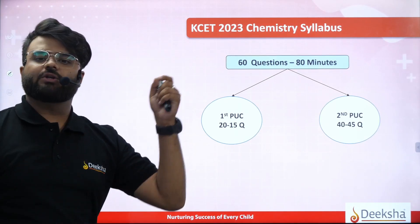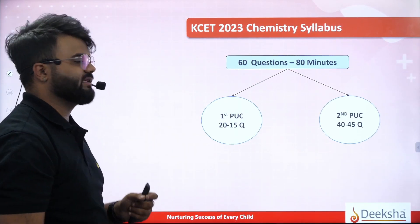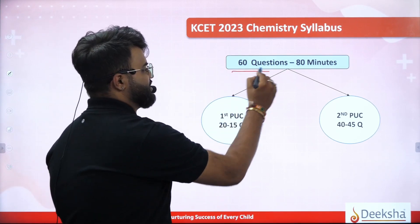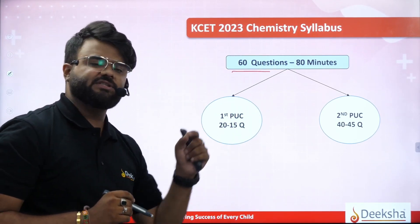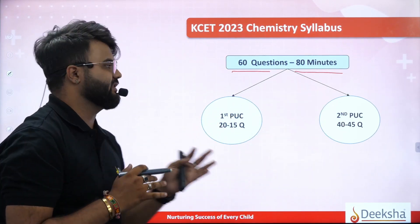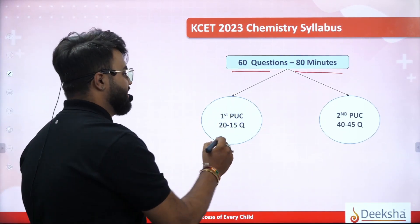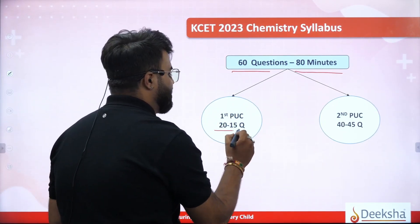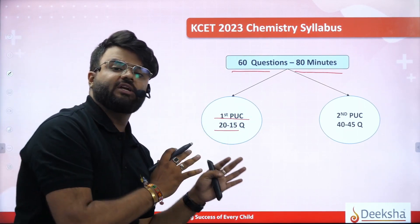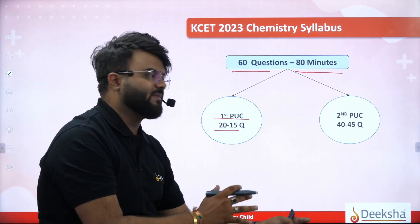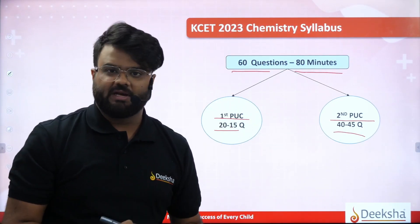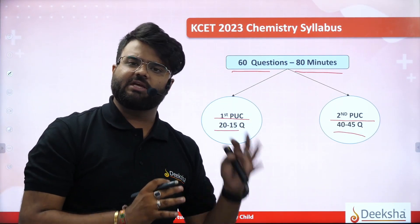In KCT 2023 Chemistry syllabus, we have 60 questions for 80 minutes. In the first PUC period, we have only 15 to 20 questions, whereas in the second PUC period, we have 40 to 45 questions. Every year, this pattern follows.